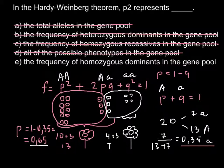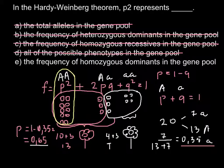Answer E: the frequency of the homozygous dominant in the gene pool. This is the correct answer — p-squared stands for the frequency of the homozygous dominant in the gene pool. That's all for today. I hope you now better understand this formula. Thank you for your attention. Please subscribe; I post almost every day. Thumbs up if you like this video. Goodbye.